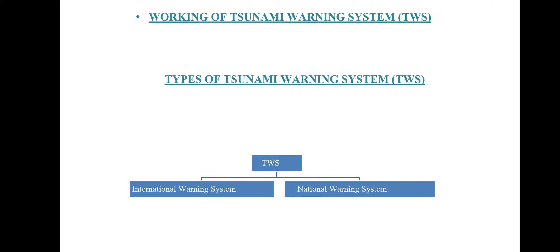The working of the tsunami warning system: a network of seismic monitoring stations at the sea floor detects the presence of earthquakes. The seismic monitoring station determines the exact location and depth of earthquakes having the potential to cause a tsunami. Any resulting tsunami is verified by sea level monitoring stations such as DART buoys and tidal gauges. We have two types of tsunami warning systems: international warning system and national warning system in India.